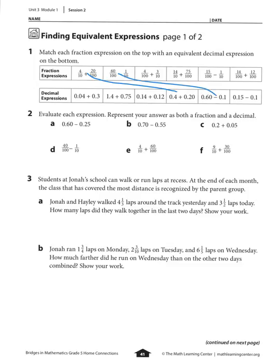Next I see 4 hundredths plus 3 tenths right here. And then I see 14 tenths 75 hundredths — only one of them has 1475 together, so I match those up: 14 tenths 75 hundredths.